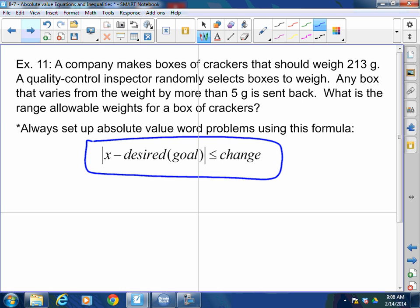This is the best equation I've ever come up with in my life. A company makes boxes of crackers that should weigh 213 grams. A quality control inspector randomly selects boxes to weigh. Any box that varies from the weight by more than 5 grams is sent back. What is the range allowable weights for a box of crackers?